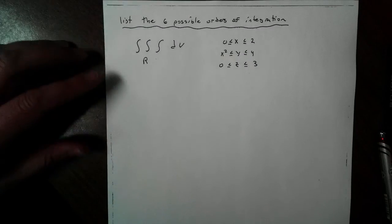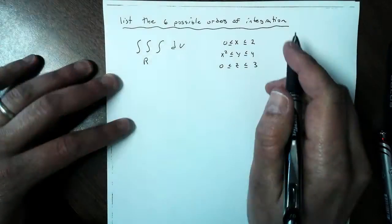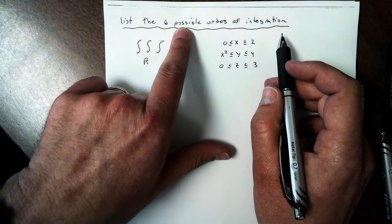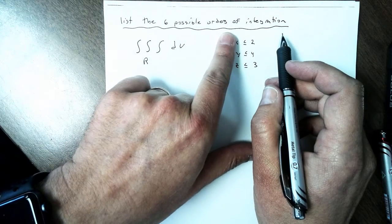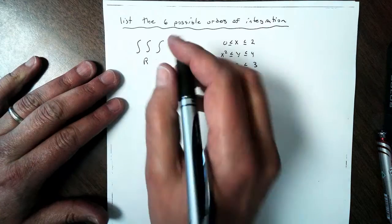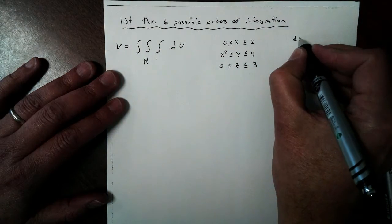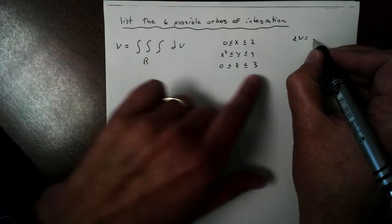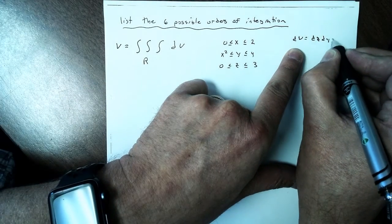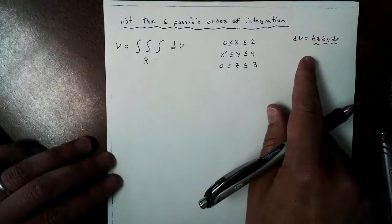Hello and welcome back. We're going to continue our discussion. In the next example, what we're going to take a look at is how can we list the six possible orders of integration for a triple integral. And here we have our triple integral like this. Remember, this is going to give us volume. Because DV, remember the DV is going to be giving us some DV, like DZ, DY, and DX. Remember, this comes from a rectangle.